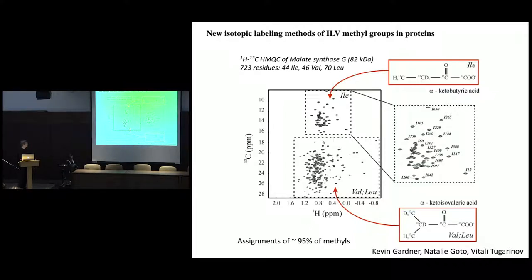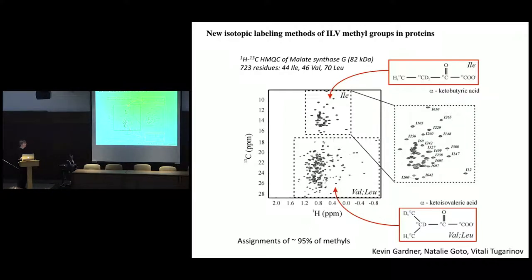Each one of these methyls gives rise to a dot in the two-dimensional NMR spectrum, which plots the carbon frequency and proton frequency along two axes. In NMR, we shine radio frequency waves on our sample, and our sample absorbs the energy. Every different methyl group absorbs energy at a slightly different frequency by virtue of its unique environment. Each dot therefore corresponds to an isoleucine, leucine, or valine, and serves as a little spy — a nuclear spy — into the structure and dynamics of precisely that methyl group. We need to know what dot corresponds to what methyl in the primary amino acid sequence; for example, this dot may be isoleucine 650, this dot isoleucine 12.